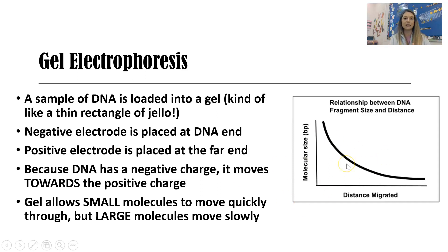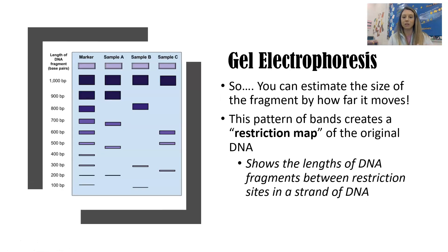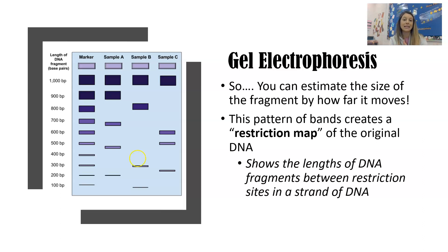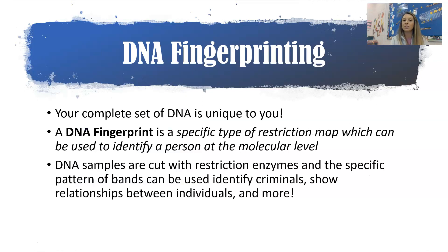You can estimate the size of a fragment by how far it moves in the gel. This pattern of bands is called a restriction map of the original DNA — it shows the lengths of DNA fragments between restriction sites in a strand of DNA. Fragments close to the top are about 1,000 base pairs, while those that move far and fast are only about 100 base pairs long. This helps us separate the different fragments cut by restriction enzymes.